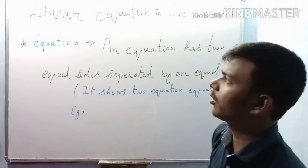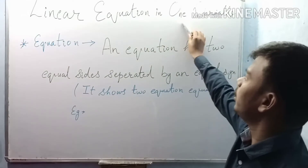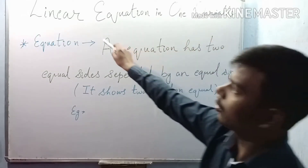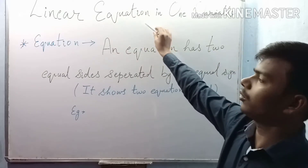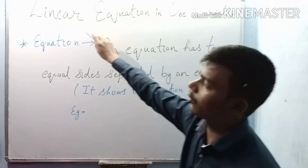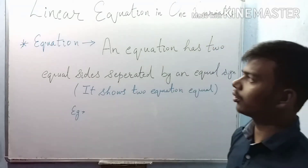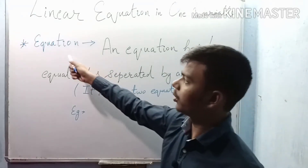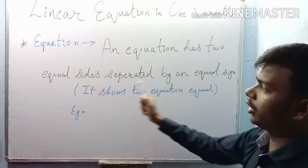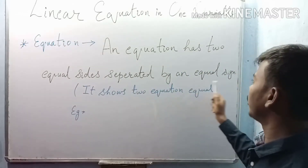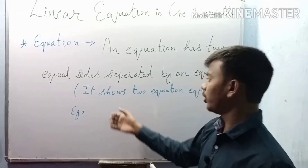The name of the chapter is 'Linear Equation in One Variable.' First, what is the meaning of equation? We will talk about this first, then we will talk about what is a linear equation and what is one variable. So before starting, let's talk about what an equation is. An equation has two equal sides separated by an equal sign.